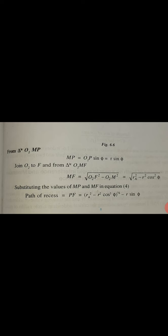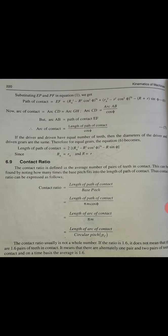Substituting the values of MP and MF, the path of recess equals square root of ra squared minus rb squared, minus r sin phi. Then, substituting the values of EP and PF in equation 1, we get path of contact EF equals square root of Ra squared minus Rb squared plus square root of ra squared minus rb squared minus (R plus r) sin phi.